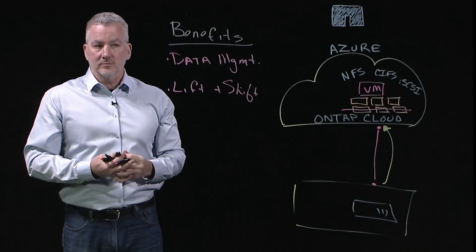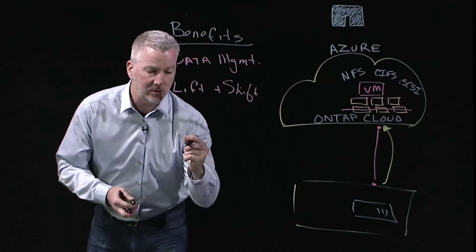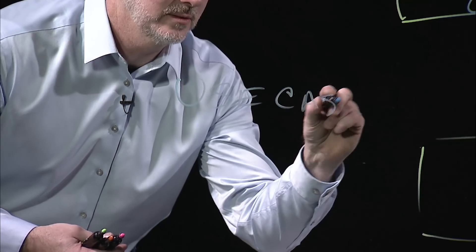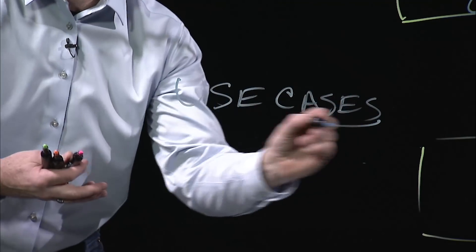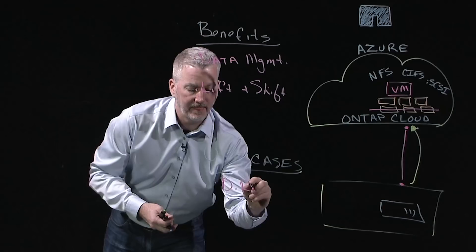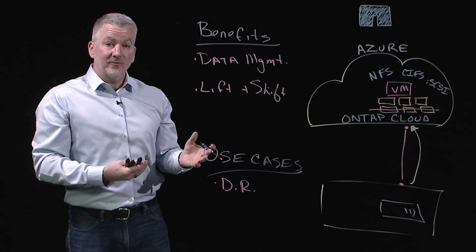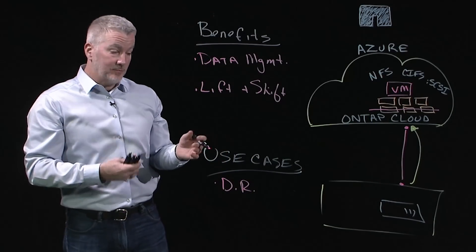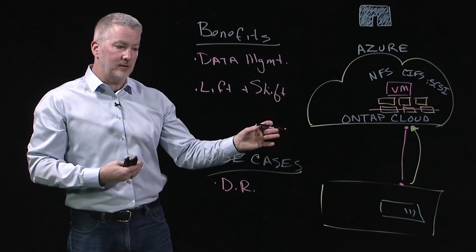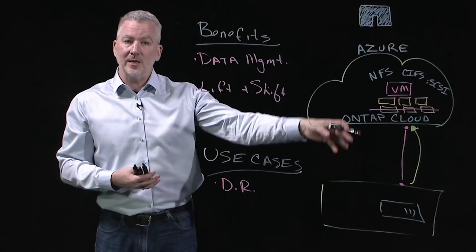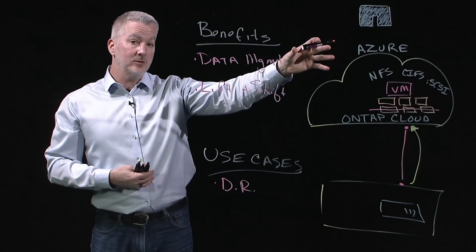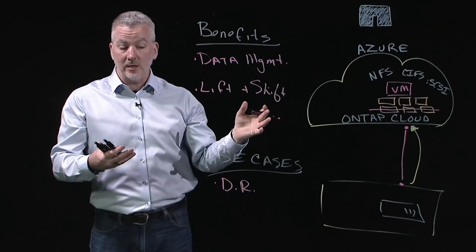Move your workloads up to the cloud. Some of those use cases include disaster recovery, or DR. Leveraging ONTAP Cloud for your DR needs makes sense mainly because it removes the need for a secondary or tertiary data center. Simply use SnapMirror to replicate your data up to the cloud and leverage your DR resources when you need them. When you don't, have them turned off — saving you time and money.